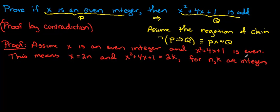Okay, so by definition of an even integer, if we assume x is even, then x looks like 2n. Similarly, if we assume x squared plus 4x plus 1 is even, that means that x squared plus 4x plus 1 equals 2k, where n and k are integers.